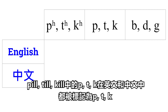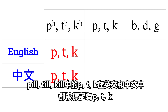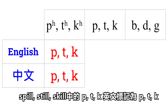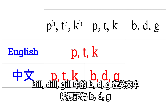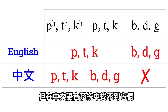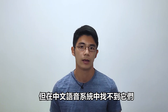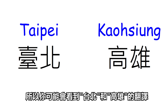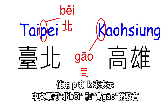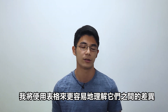The PTK as in pill, till, kill are labeled as PTK in both English and Chinese. The PTK as in spill, still, skill are labeled as PTK in English but BDG in Chinese. The BDG as in bill, dill, gill are labeled as BDG in English; however, they're not inside the Chinese sound system. The BDG in Chinese are actually PTK. So you may see that the translation of Taipei and Kaohsiung uses P and K for the sounds of the Chinese words 'bay' and 'gao'. I'm going to use a table to make it easier to understand their differences.